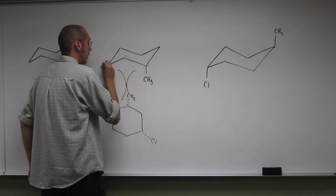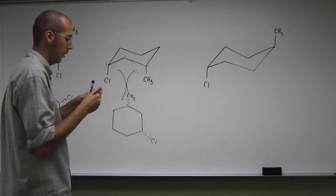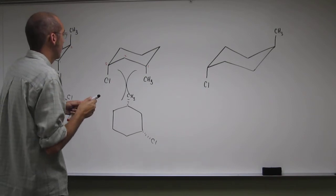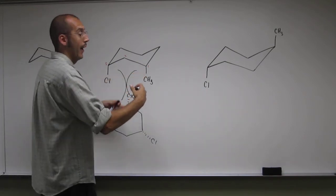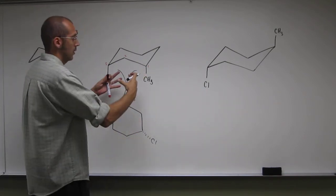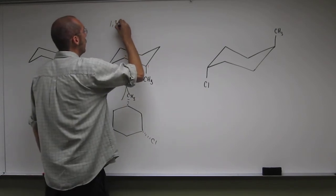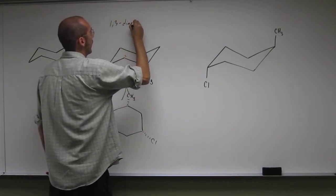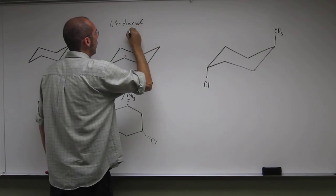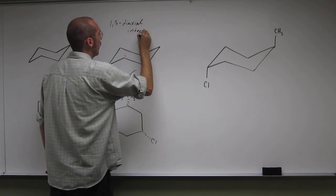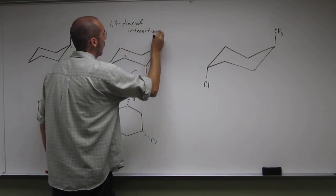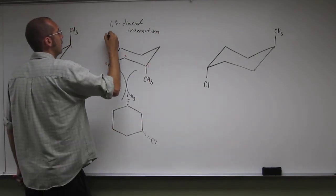The 1,3 positions where you've got two big axial substituents they actually clash and they don't like to be next to each other because of the steric hindrance. We call that the 1,3-diaxial interaction. Okay so that's really bad. High, high energy.